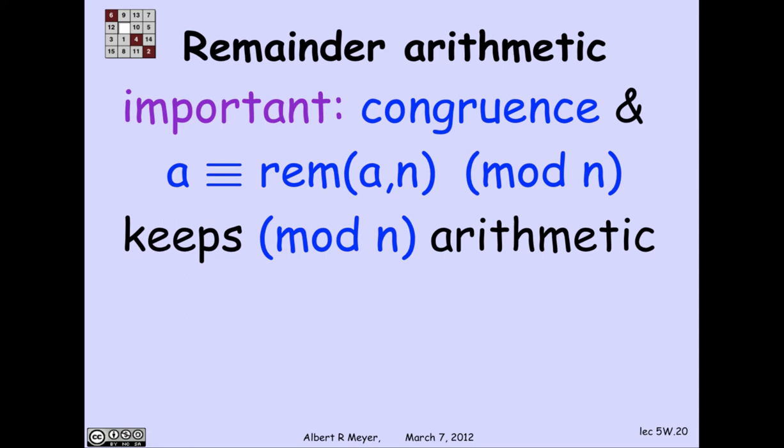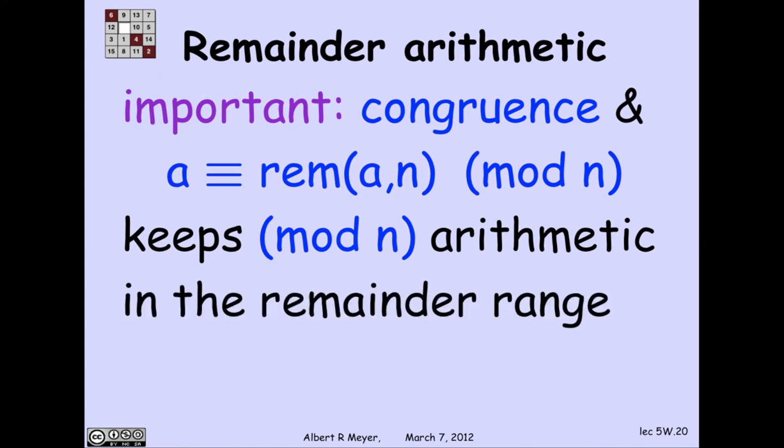that follows from this fact about remainders is that because a is congruent to the remainder of a divided by n, then when I'm doing arithmetic on congruences, I can always keep the numbers involved in the remainder interval. That is, in the remainder range from 0 to n minus 1.